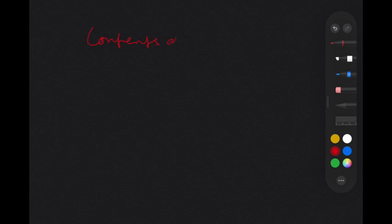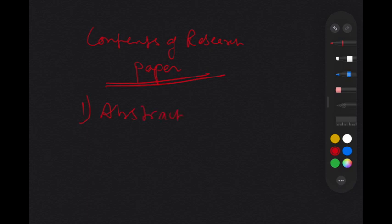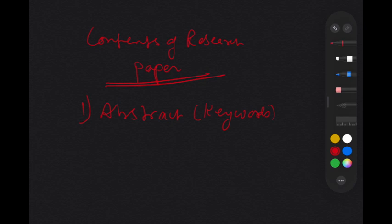Now very quickly we will touch upon the contents of a research paper. The contents vary from journal to journal, but in general — and I want to make it easy for beginners rather than complicated — whenever we start writing a research paper, there are certain points to cover. The first is the abstract, which contains keywords. Remember, we usually write the abstract at the end of the research paper because it is a summary. The outline we make at the start is different from the abstract; the abstract is a different thing — typically 250 to 300 words — and includes how you started and how you ended the paper.